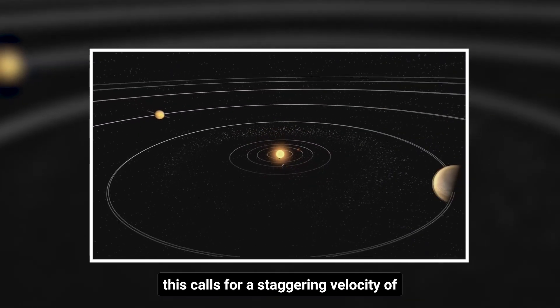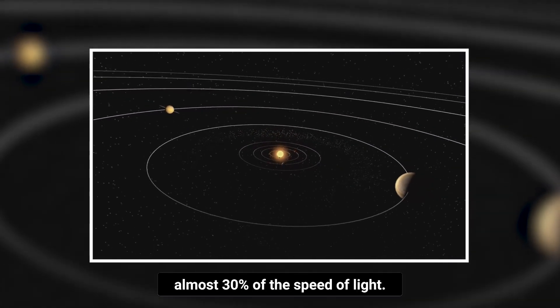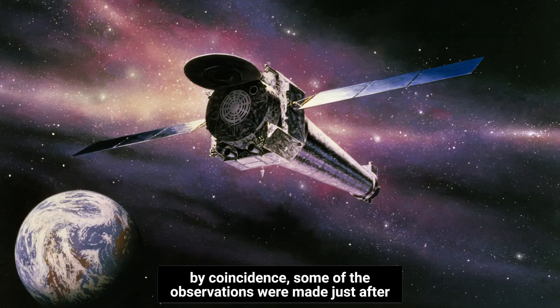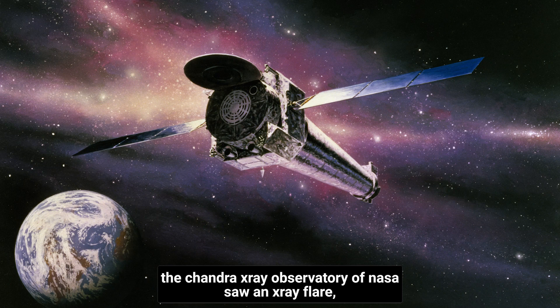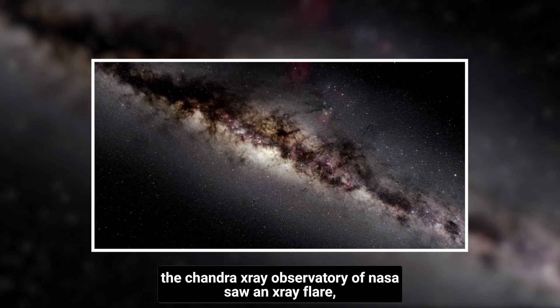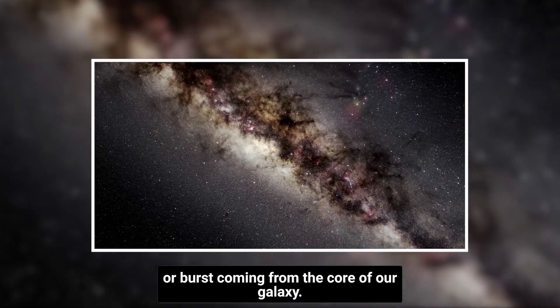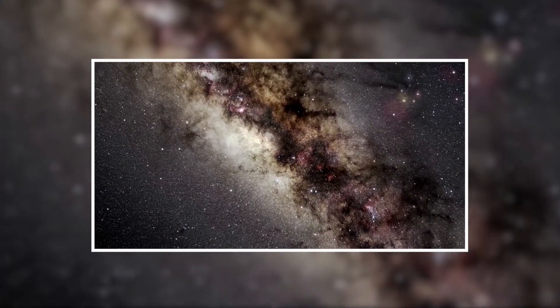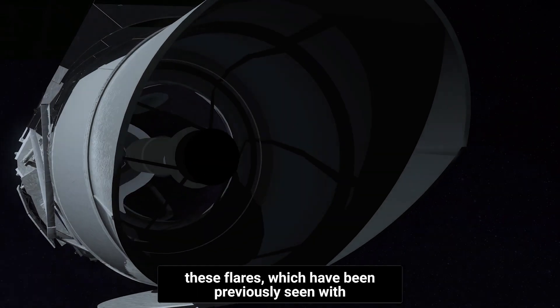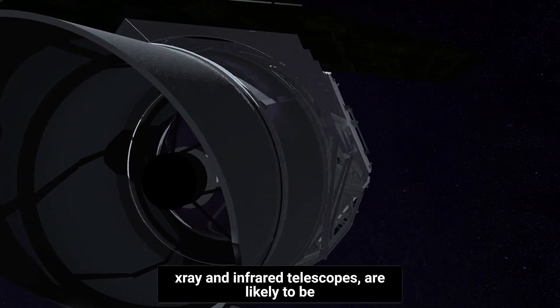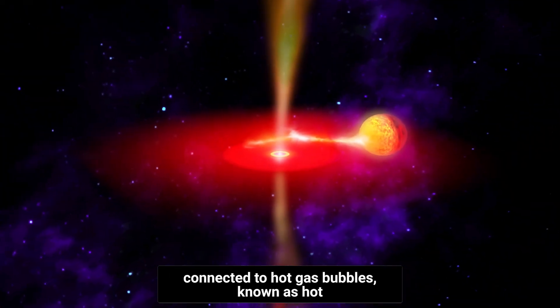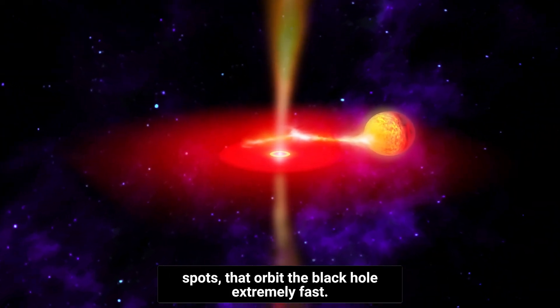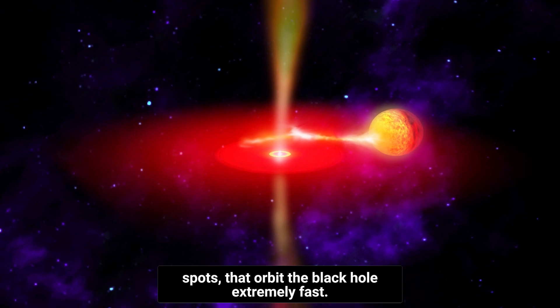This calls for a staggering velocity of almost 30% of the speed of light. By coincidence, some of the observations were made just after the Chandra X-ray Observatory of NASA saw an X-ray flare or burst coming from the core of our galaxy. These flares, which have been previously seen with X-ray and infrared telescopes, are likely to be connected to hot gas bubbles known as hot spots that orbit the black hole extremely fast.